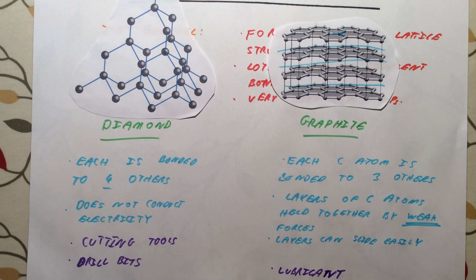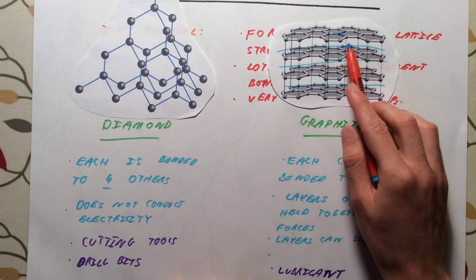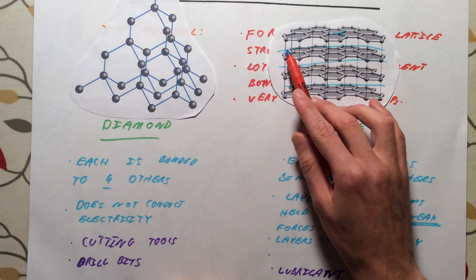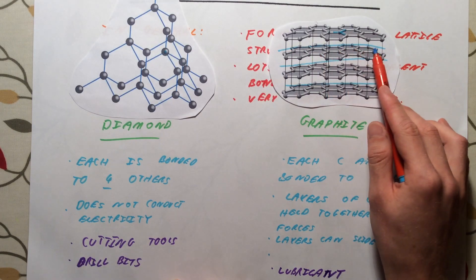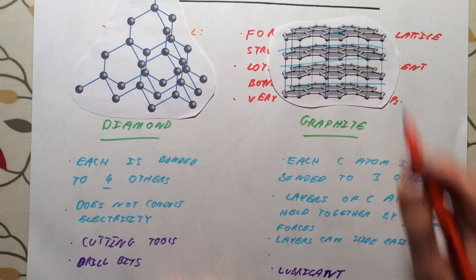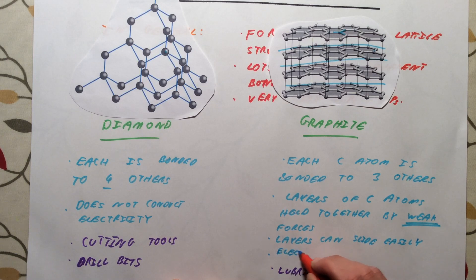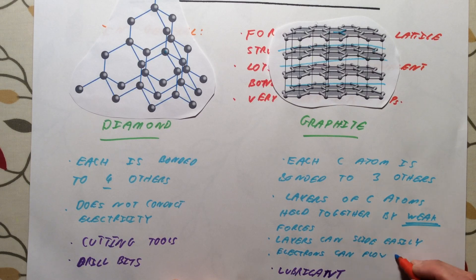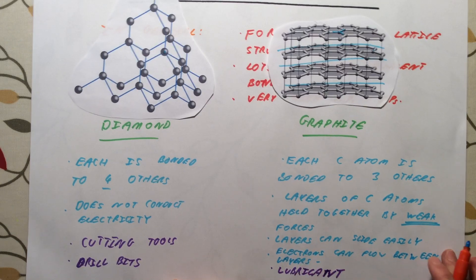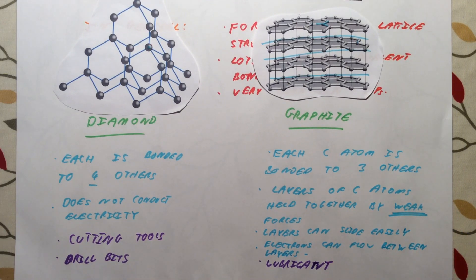Not only that, but because every carbon only has three bonds, there are actually delocalized or free electrons that are able to flow around in between these layers. So electrons can flow between layers. Therefore, graphite can conduct electricity.